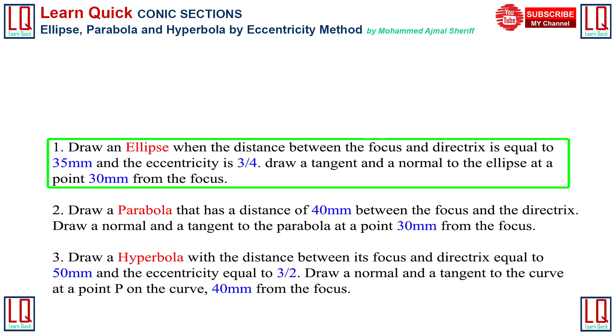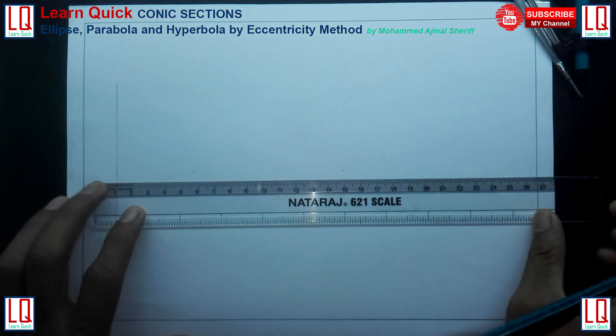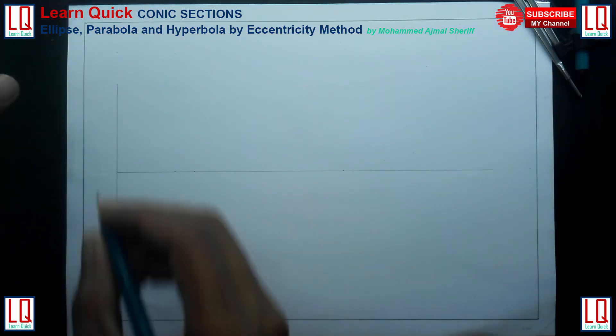And also we need to draw a tangent and normal to the ellipse at a point 30 mm from the focus. Draw a vertical line called directrix D, D dash, and an axis line perpendicular to directrix.